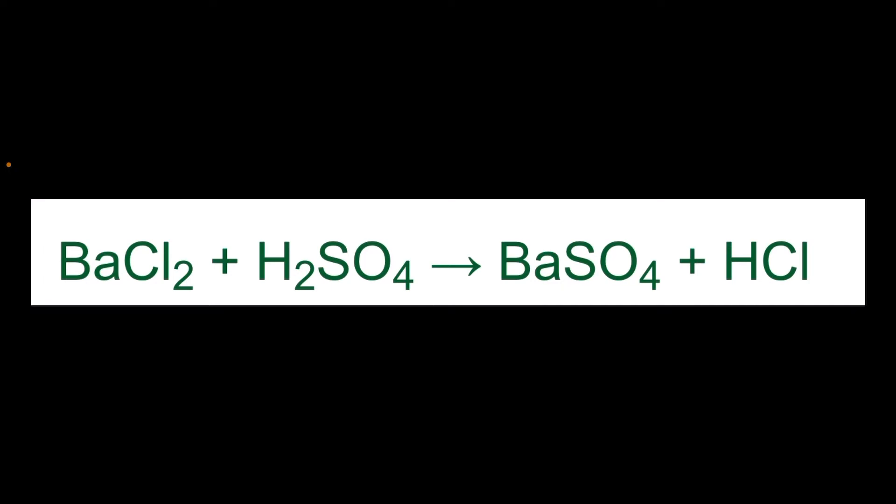Now, when you combine them, the barium and the sulfate ions create the precipitant barium sulfate, BaSO4, and that was the cloudy precipitant that you saw, and of course the product hydrochloric acid HCl.